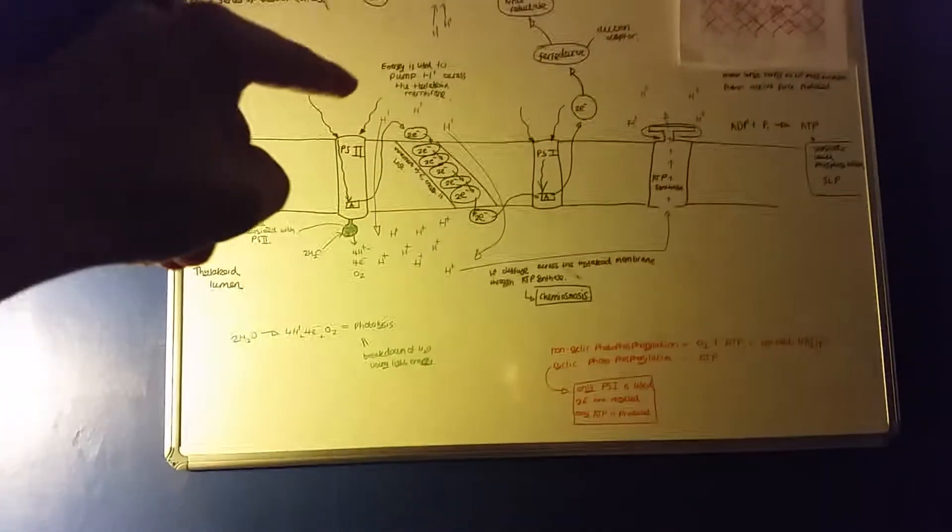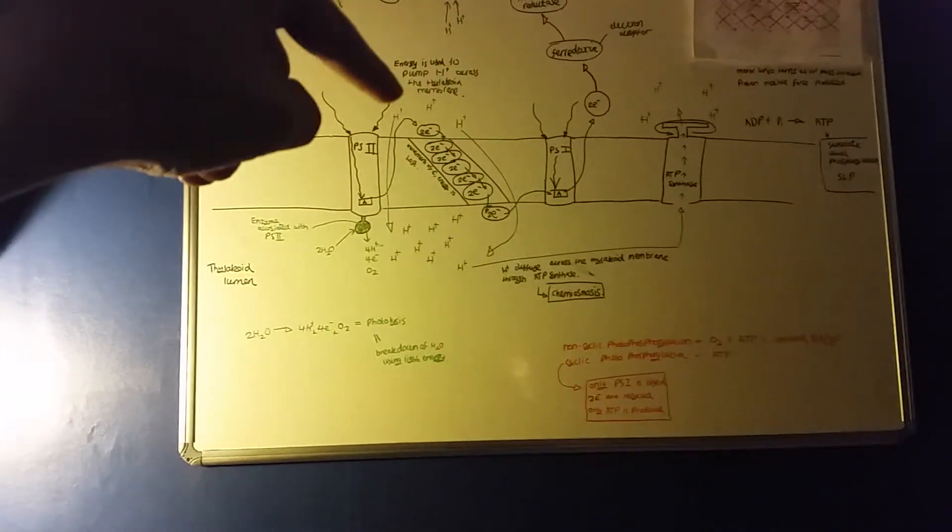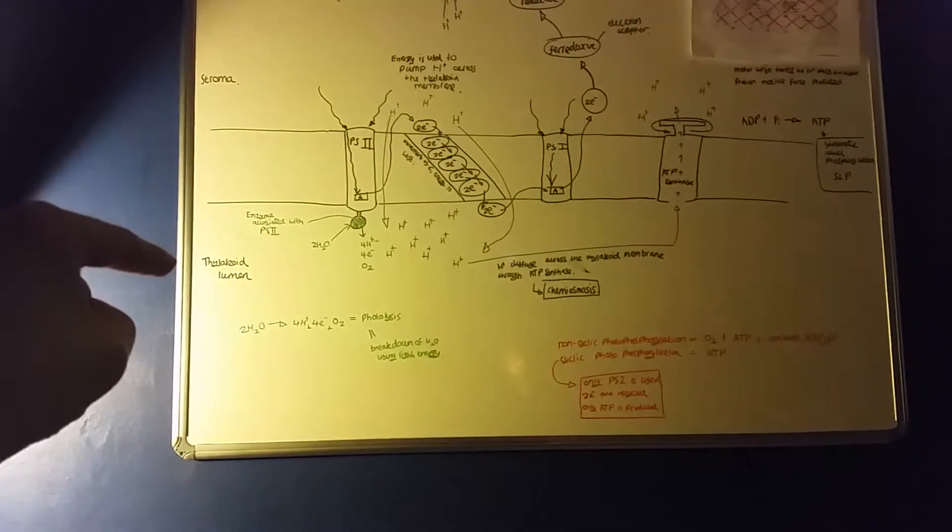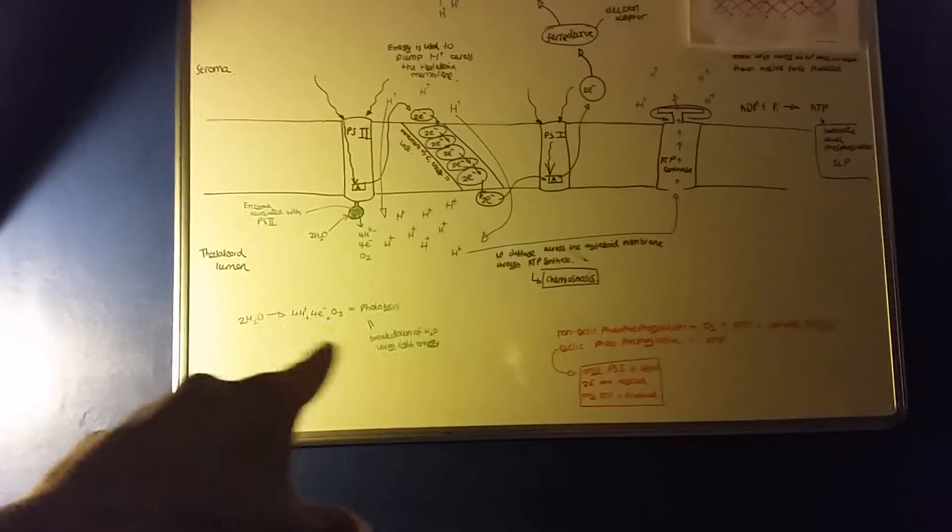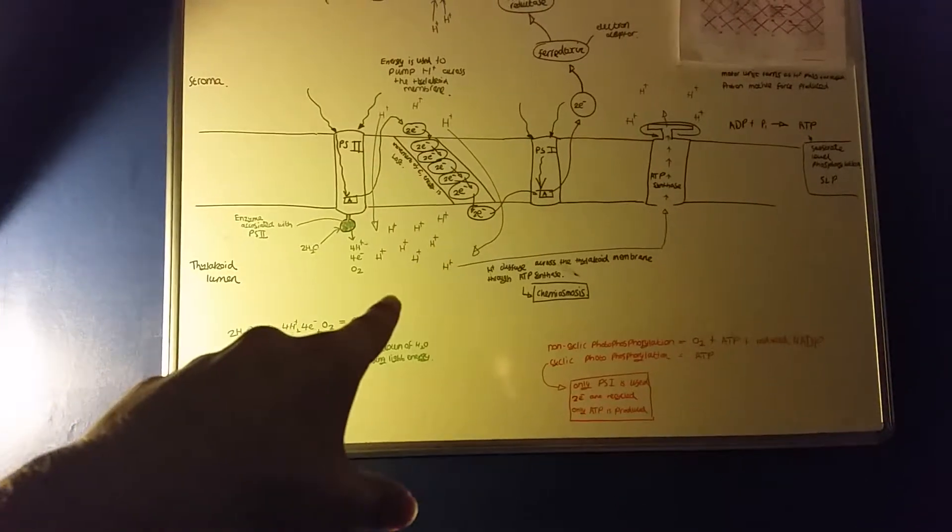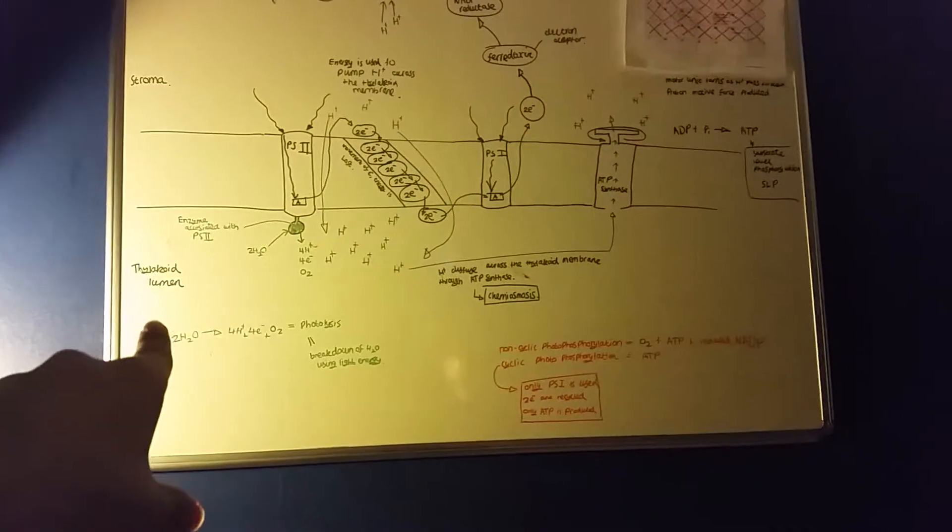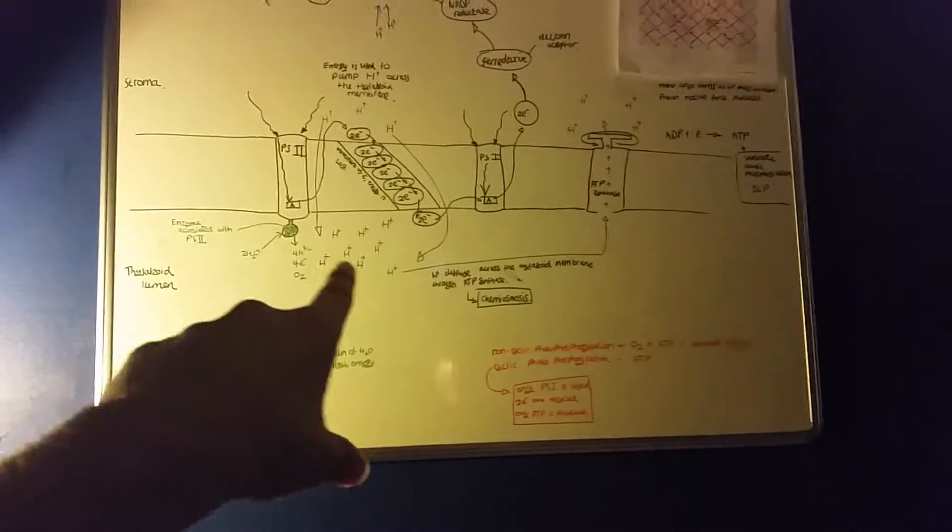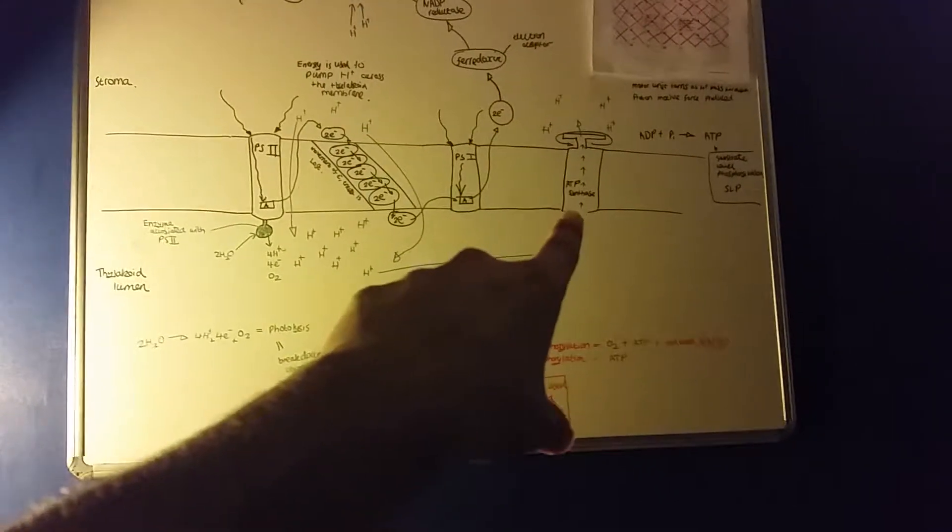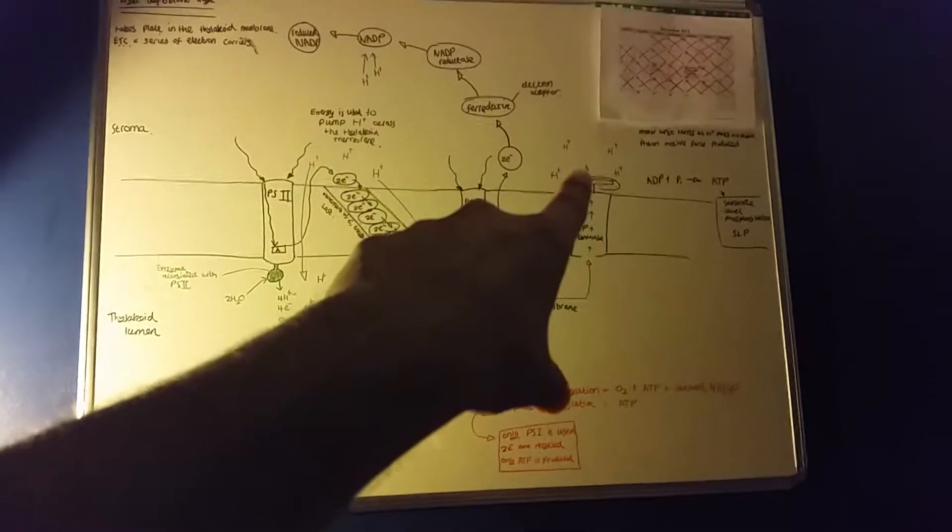The energy is used to pump hydrogen ions across the thylakoid membrane. This builds up a high concentration of hydrogen ions in the thylakoid lumen, and so by diffusion, the hydrogen ions will diffuse through ATP synthase and back into the stroma.